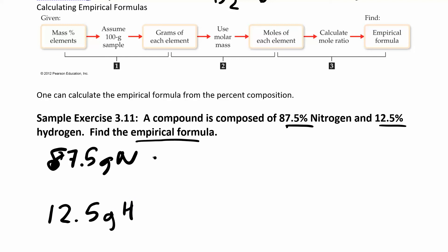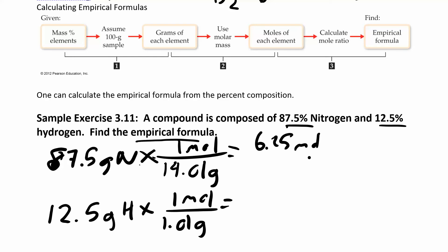Now what you want to do is convert from grams to moles. How do you do that? Molar mass. So the molar mass of nitrogen is 14.01 grams per one mole, and I just got that from the periodic table. 1.01 grams of hydrogen for every one mole. So now I convert everybody to moles. When I do that, I get 6.25 moles of nitrogen and I'm going to divide both of them by 6.25.